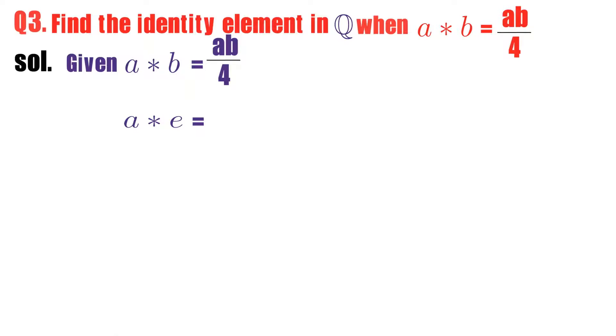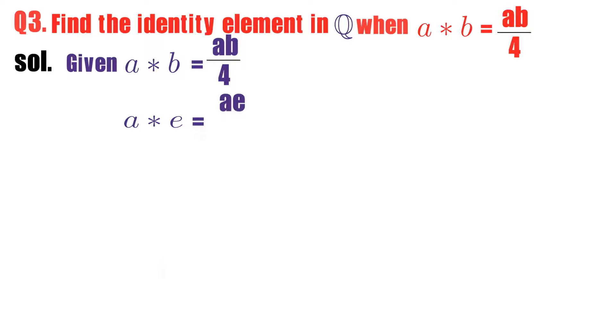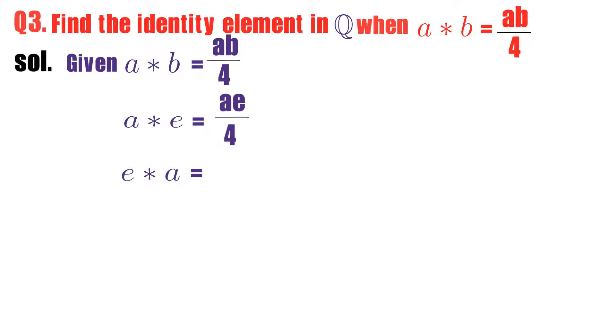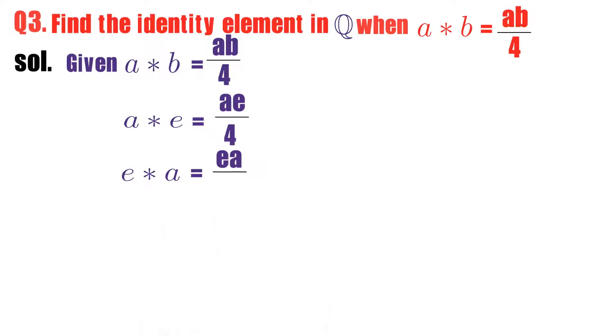Now I will calculate a star e. What is a star e? It is easy to say - a into e divided by 4. Now you calculate e star a. Tell what is e star a. Yes, ea divided by 4.